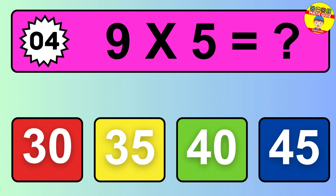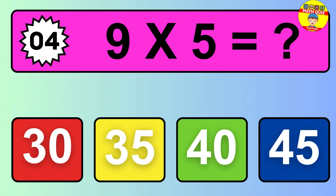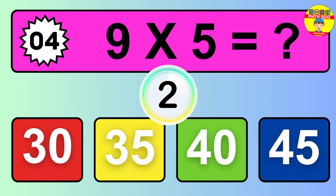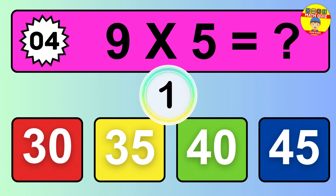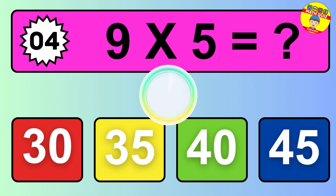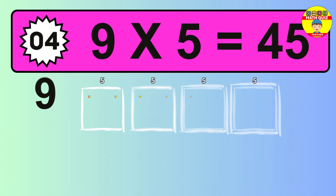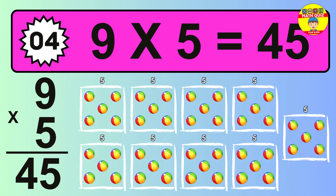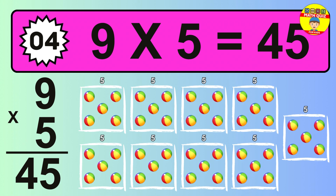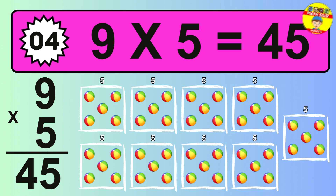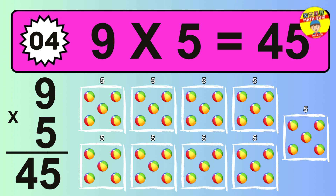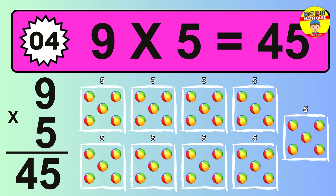Question 4. 9 times 5 equals what? The answer is 9 times 5 is 45. To calculate, we have 9 groups with 5 balls each one. So how many balls do we have? 45 balls.